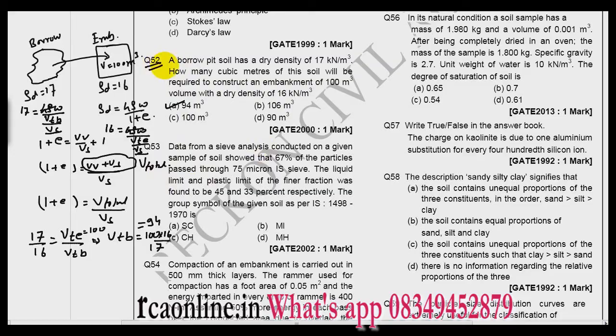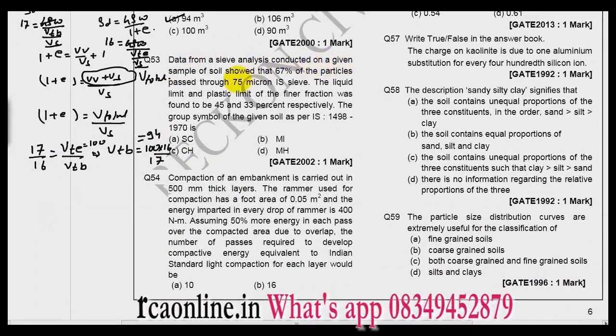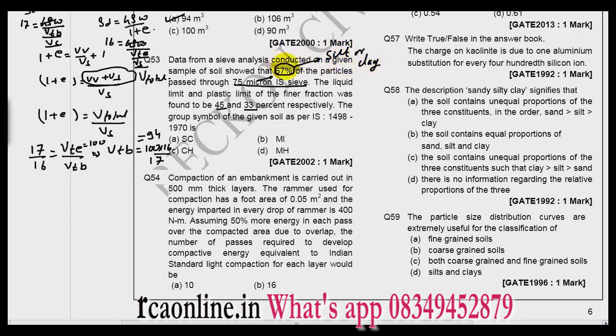Now data from the sieve analysis conducted on a given sample of soil shows that 67 percent of the particles passed through the 75 micron IS sieve. The liquid limit and plastic limit for the soil is 45 and 33. The group symbol? Now since 67 percent of the soil passes from 75 micron, so the soil will be either silt or clay. It can be either of the two, but it will be fine grained because 67 is greater than 50. In the question it is given liquid limit and plastic limit, so what is my Ip now? Ip is 45 minus 33, which is 12. On the graph I have to locate the soil.